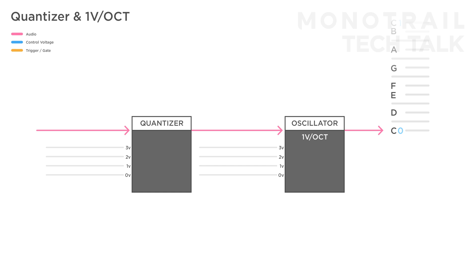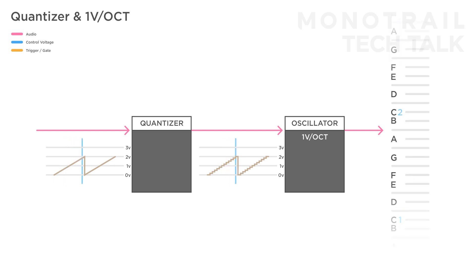You can feed a quantizer any kind of voltage you like — again, a slowly rising envelope for example. The quantizer will continuously check the incoming voltage, but only output steady voltages that correspond with the chosen scale. For example, if you set your quantizer to a chromatic scale, matching all the notes you would find in an octave on a piano, the quantizer will divide every incoming rising volt into a 12-step staircase, picking an option closest to the incoming voltage. This will not result in a slowly rising frequency, but frequencies that hold until the incoming voltage is closer to another division.